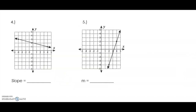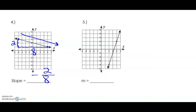I've got a couple more examples. I'll highlight the points so you can see them. This line is falling from left to right, so the slope is going to be negative. I'll set up my fraction — the rise is two, so that's my numerator. The run is one, two, three, four, five, six, seven, eight — so the run is eight. That gives us negative two over eight, which simplifies to negative one fourth.